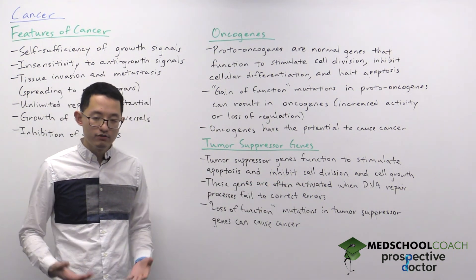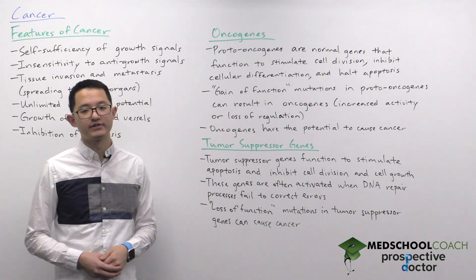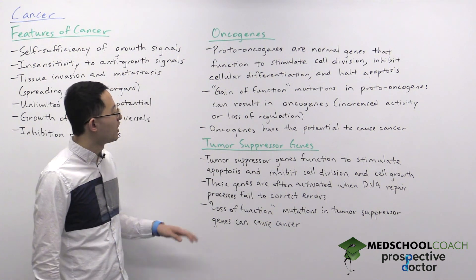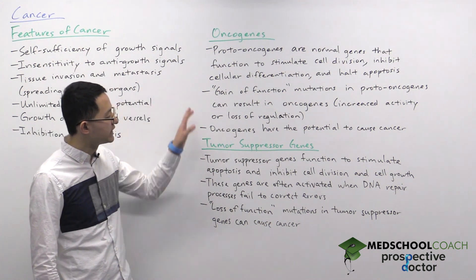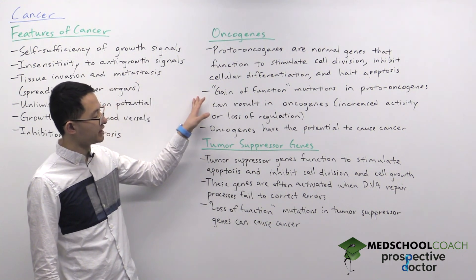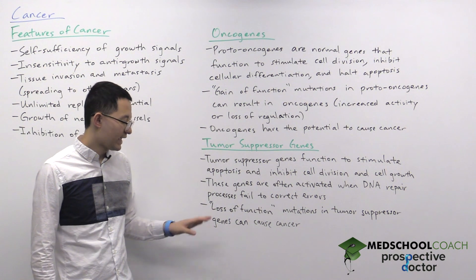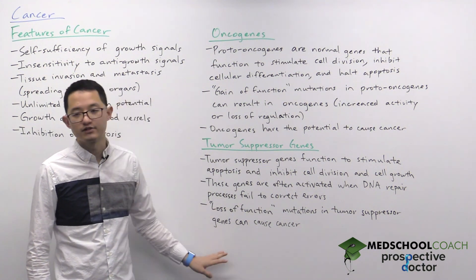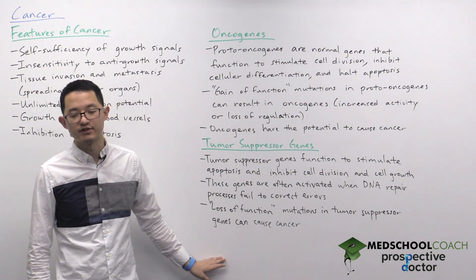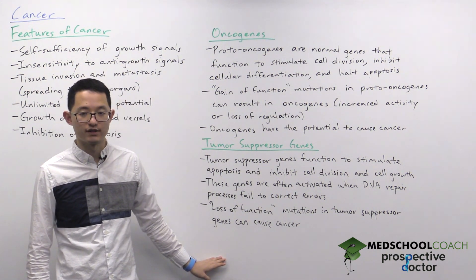In most cases of cancer there is a combination of gain-of-function mutations that produce oncogenes and loss-of-function mutations in tumor suppressor genes.